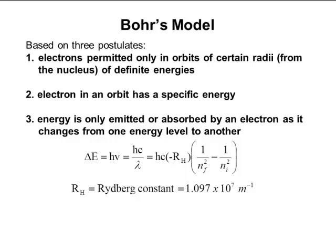When I look at this equation, if I want to calculate the energy associated with the electron going from N equals 5 to N equals 2, my final would be 2 and my initial would be 5. When I do that calculation, I get an energy that I can convert to a wavelength and confirm it's that 434 nanometers. Since H, C, and R_H are all constants, we can combine them together into a single constant value and simplify the equation to: delta E equals negative 2.18 × 10⁻¹⁸ joules times (1/N_f² minus 1/N_i²).